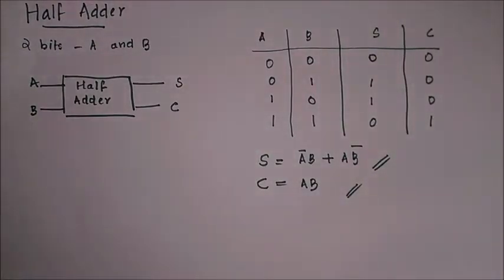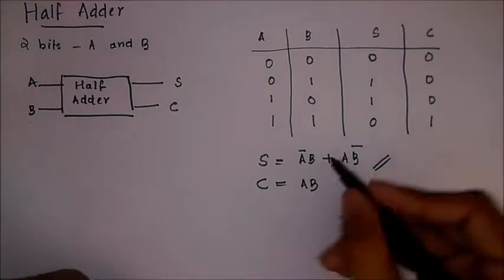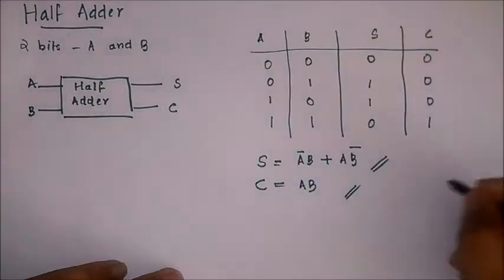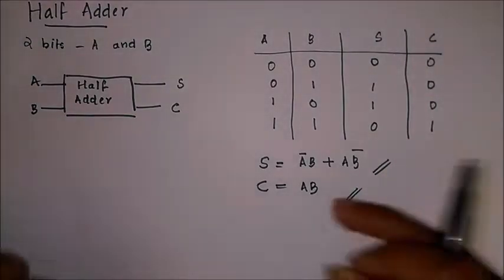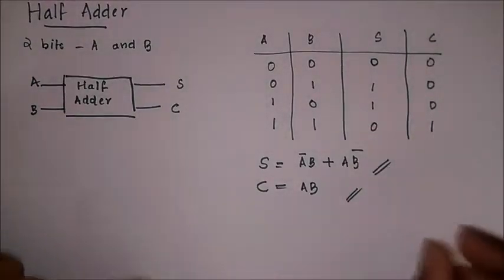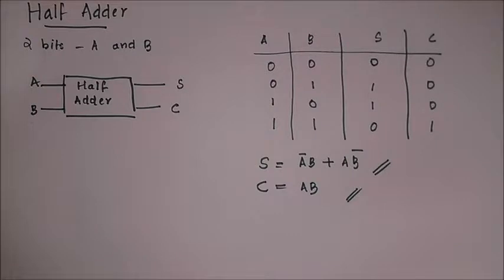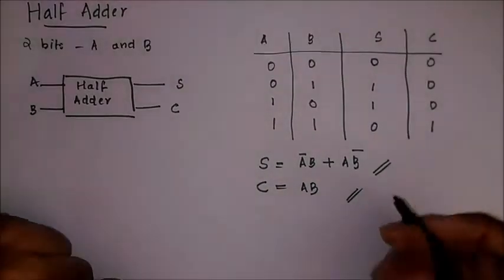So this is the sum and carry for our half adder having single bit inputs A and B. You may also get these equations by drawing a K-map and simplifying, however this is more easy and less time consuming. So now if we look at this...